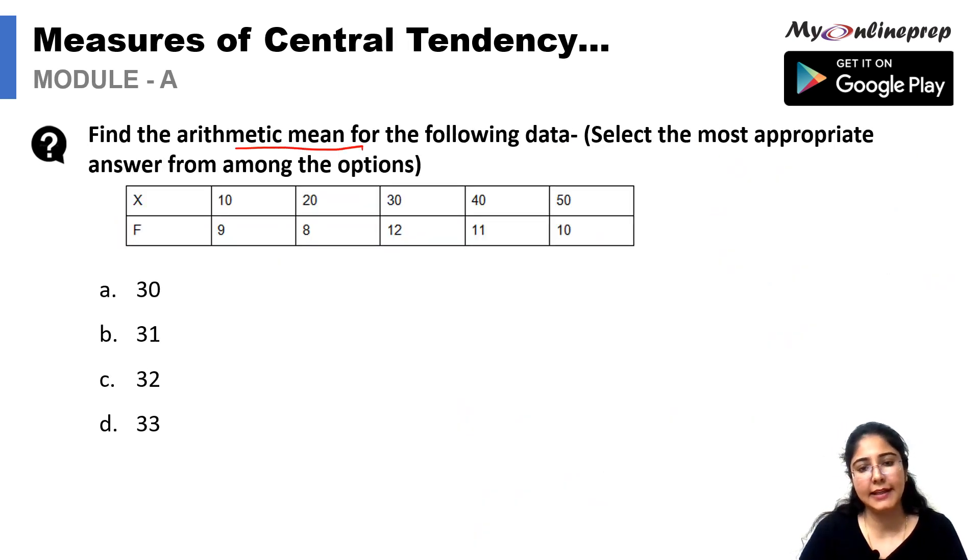Find the arithmetic mean for the following data. Select the most appropriate answer amongst the options. We have X, we have F, we have X series, we have F series, and we have to calculate the mean. The normal formula, we have X and F, which is 10, 20, 30, 40, and 50. F is being given as 9, 8, 12, 11, and 10. Simple formula, F times X, which is 90, 160, then we have 360, then 440, and then we have 500.